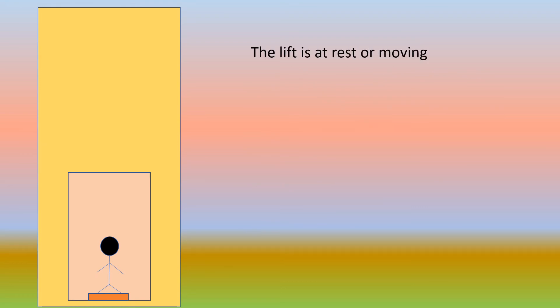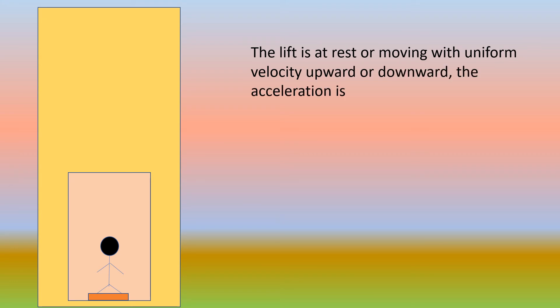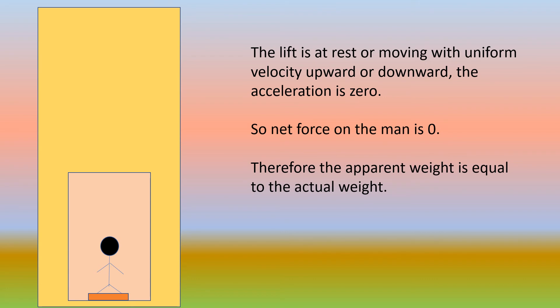Now let us see what we feel when we are in the lift and the lift is at rest or moving with uniform velocity upward or downward. When it is moving with uniform velocity or if the lift is at rest, the acceleration is always zero. So the net force on the man is also zero. Therefore, the apparent weight will be equal to the actual weight — that means R will be equal to Mg.